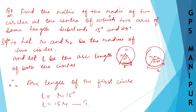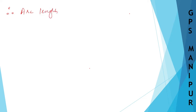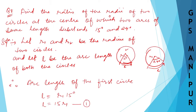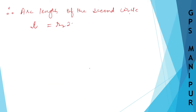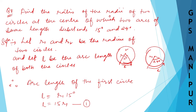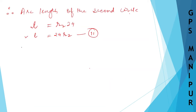Next, the arc length of the second circle: l is equal to r2 into theta, which is 24 degrees. So l equals 24·r2 — this is equation number two. So from equation one, l equals 15·r1, and from equation two, l equals 24·r2.